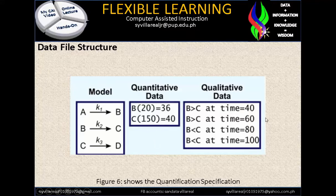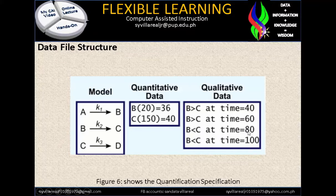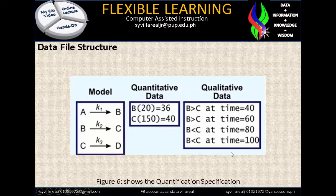Qualitative data is something like a number that you can count. Right here we have B is greater than C. We can identify that B is greater than C at time 40 — this is what you call time-bound data evaluation. B is greater than C, then B is less than C at time 60, 80, and 100. There is what you call quantification — identified as quantitative and qualitative. If you are starting, you can use quantitative; but if you have the complete answer of your problem, then you can go to qualitative.